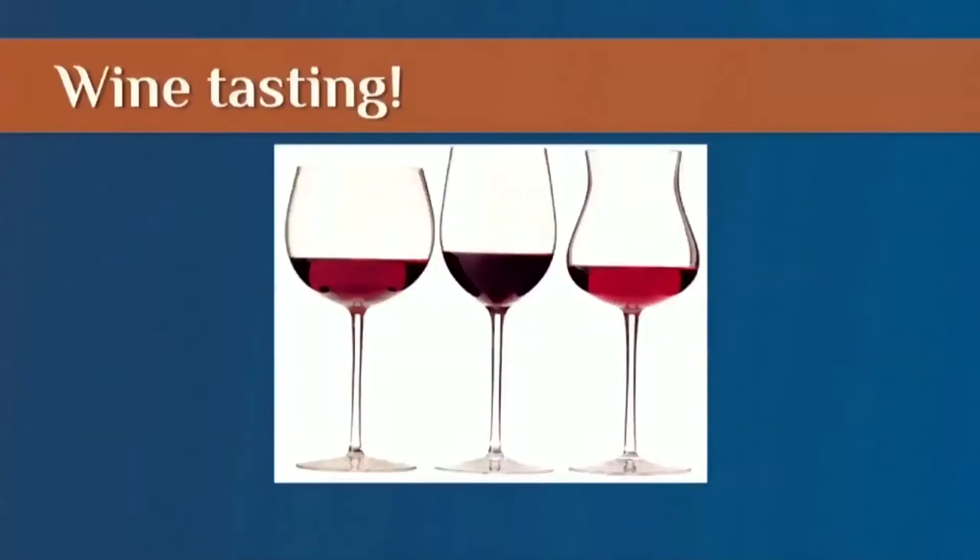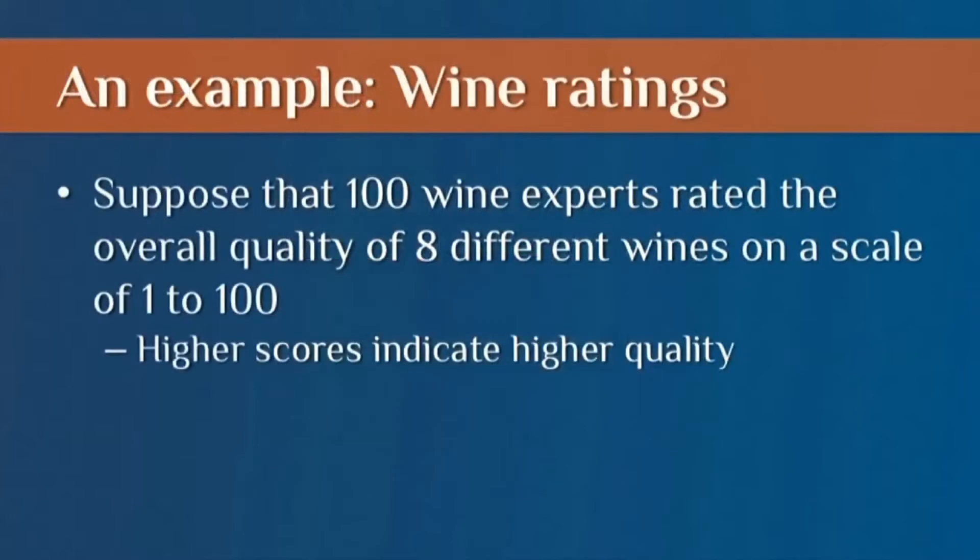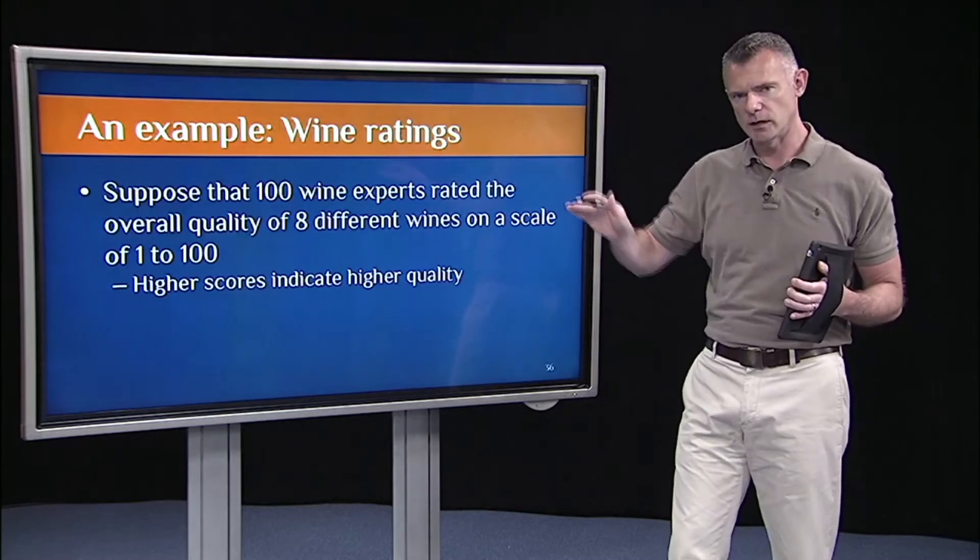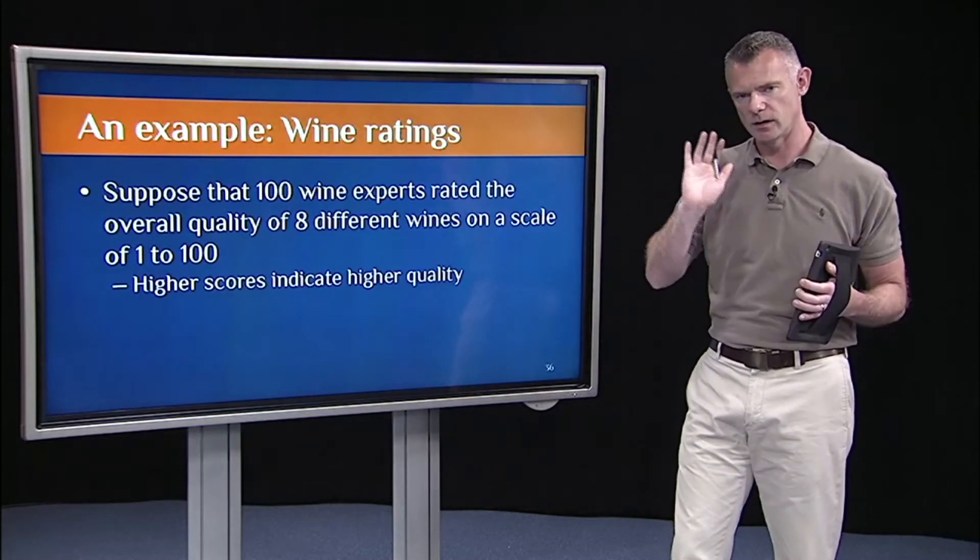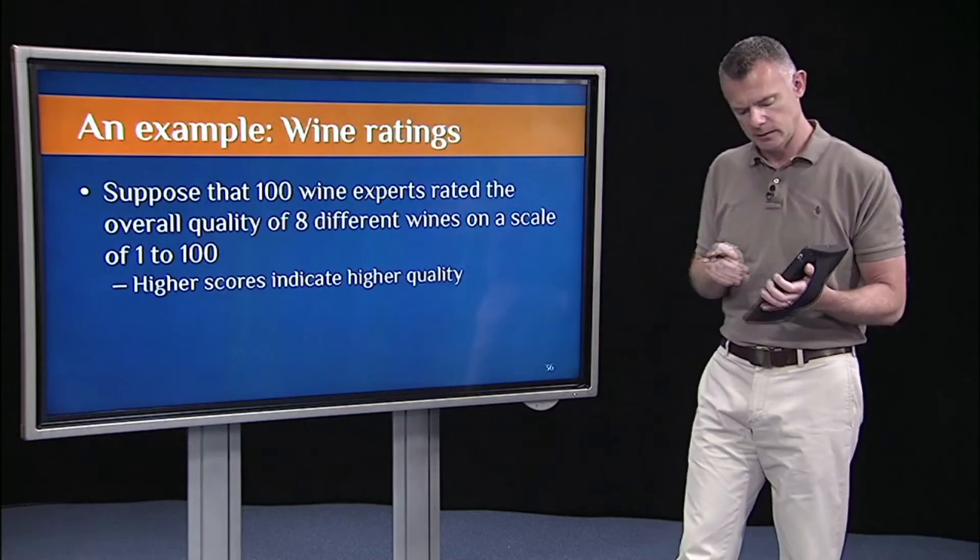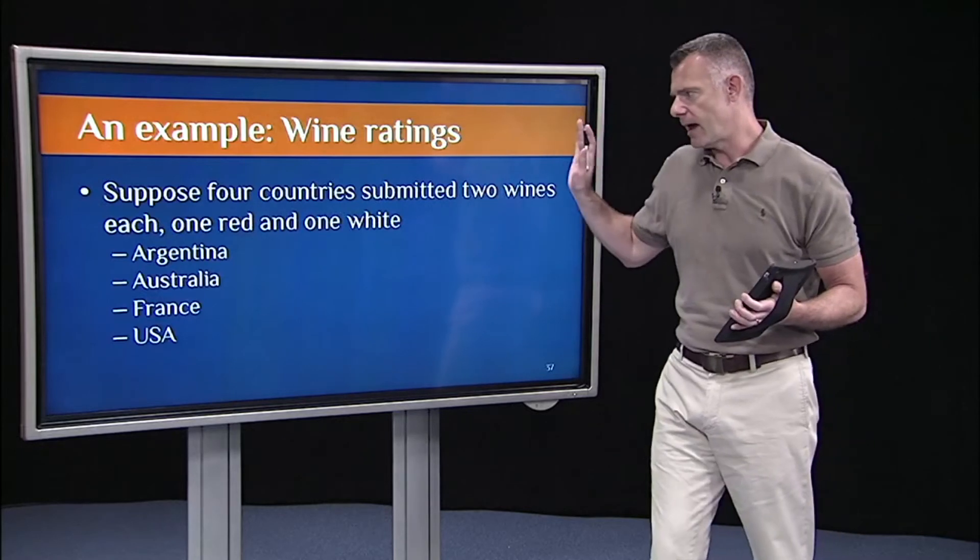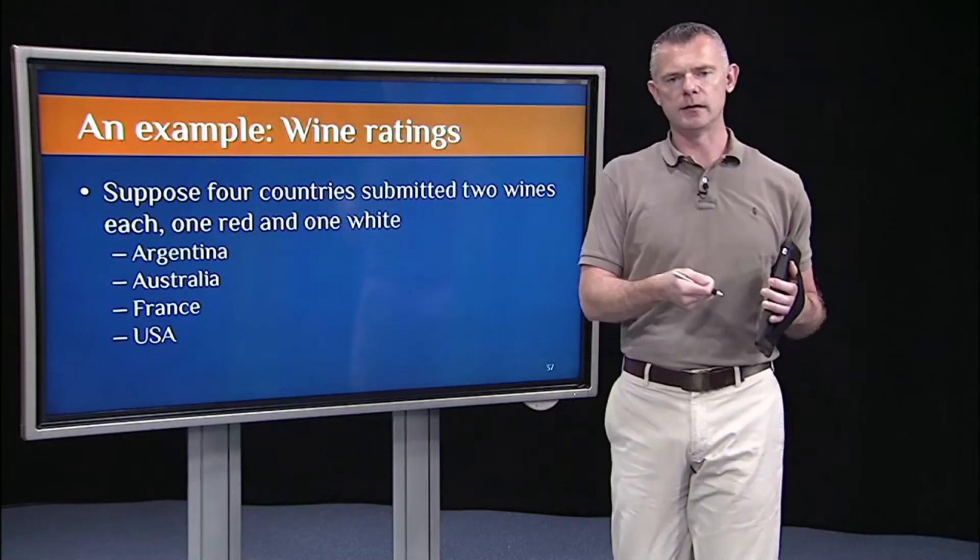So let's go wine tasting. So in this example, suppose that we have 100 wine experts. And they're going to drink and rate the overall quality of eight different wines. They're going to rate four red wines and four white wines. And in all the examples, higher scores indicate higher quality. So if they give it a score in the 90s, that means they really liked it.